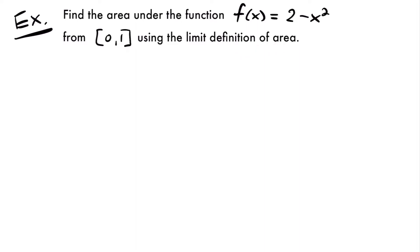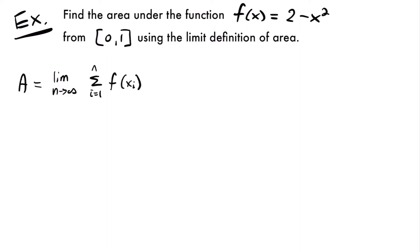The limit definition of area looks like this. The area A is equal to the limit as n approaches infinity of the sum from i equals 1 to n of f(x_sub_i) times delta x.